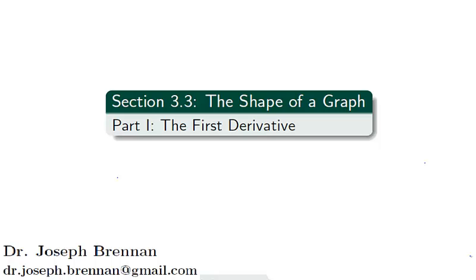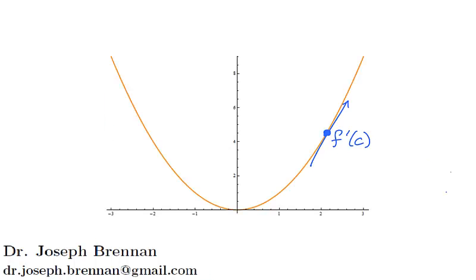Hello and welcome to the first video of section 3.3 on how the first derivative affects the shape of a graph. The derivative of a function at a point is the instantaneous rate of change of the function. If the derivative is positive, we expect the function to increase at larger x values, while we expect the function to decrease after a point with a negative derivative.